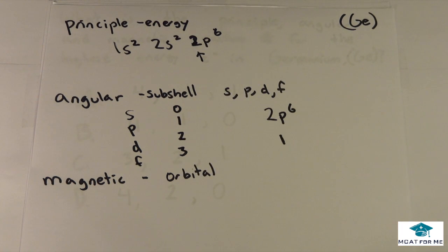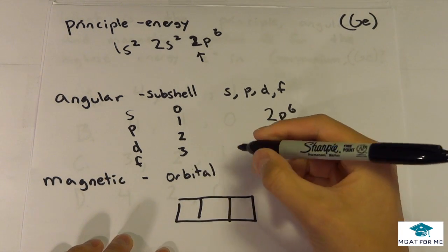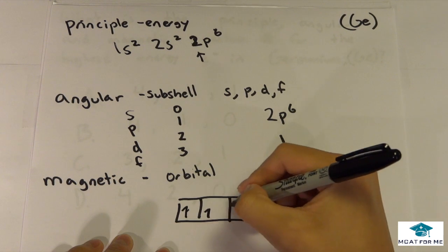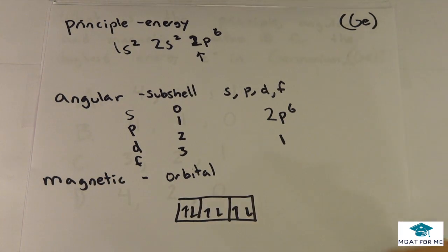So a magnetic orbital, or the magnetic quantum number is actual orbital. So if we look at the p block, we know it's split up into 3 orbitals. So it can have electrons like this, like this, like that.